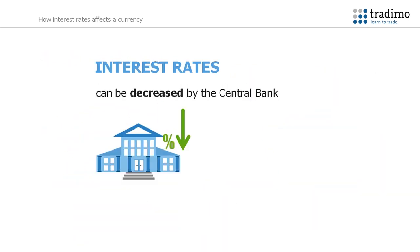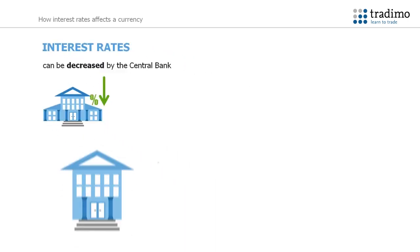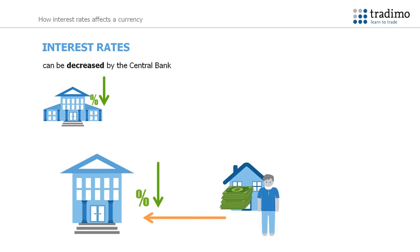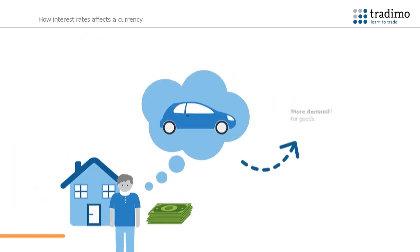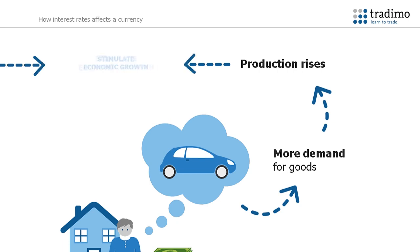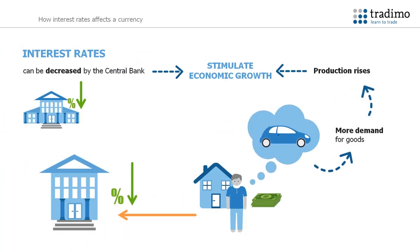However, when the economy is not doing so well, the central bank might want to decrease the interest rates to stimulate the economy. When the interest rates are lower, a homeowner spends less on his mortgage and therefore has more money to buy other goods and services, like cars. These goods need to be produced, so by lowering interest rates, production will rise and thereby stimulate economic growth.